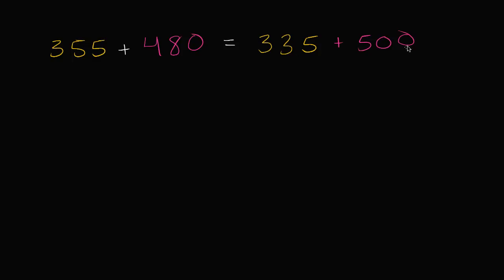335 plus 500. Well, it's going to be 300 plus 500. It's going to be equal to 800. And then we have 35. 835. Now, to make it a little bit clearer what we did, remember, we wanted to take 20 from here and put it over here.